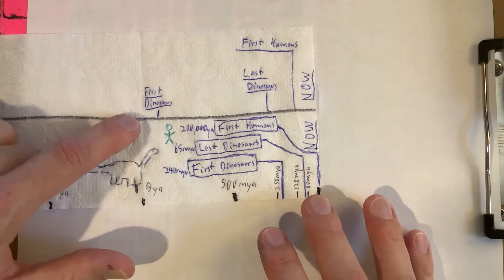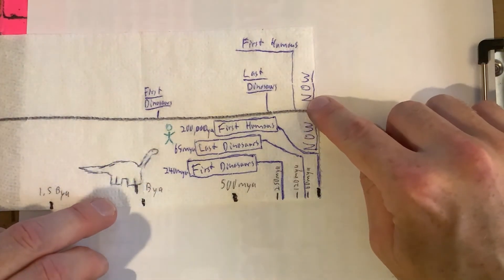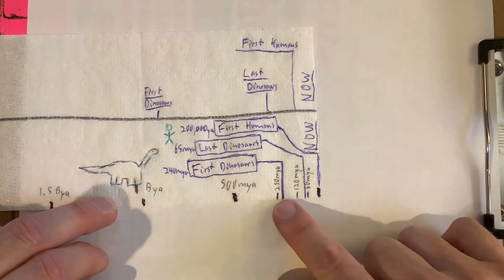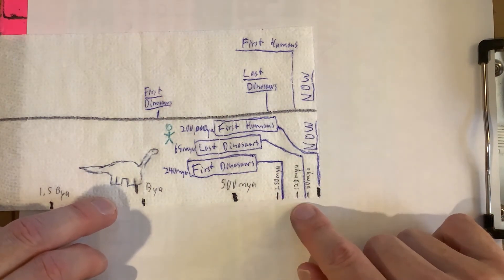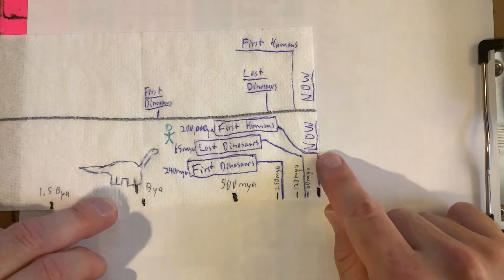You can see how far off I was. I thought dinosaurs had been on Earth for at least about a billion years and humans for a lot longer as well. I had no idea that it was this close on the timeline. The first dinosaurs were 240 million years ago, last dinosaurs were 65 billion years ago, and then humans we barely even make it onto that timeline.